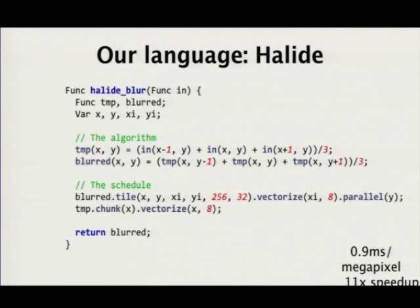As far as future-proofing goes, our goal was to make the statement of the algorithm as divorced as possible from its adaptation onto a particular piece of hardware. We divorce the algorithm statement from hardware concerns, but we don't let you avoid specifying those concerns — we push all of that into the schedule half. For new hardware, you will need to change the schedule.